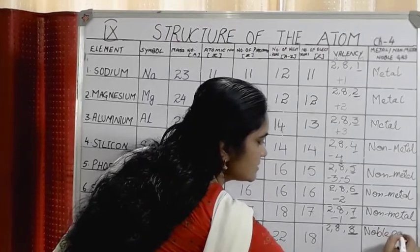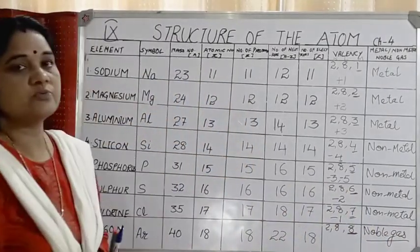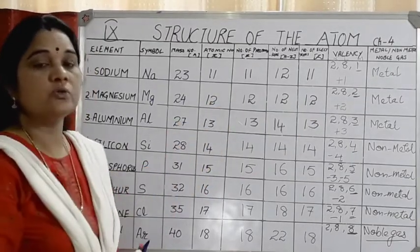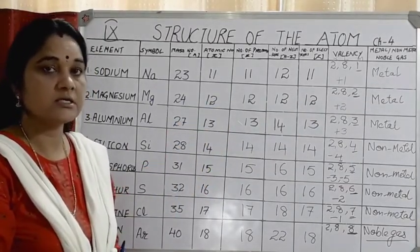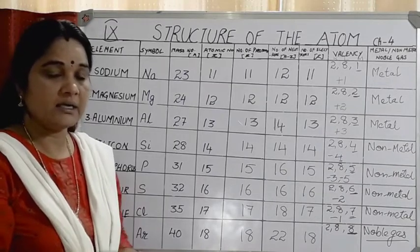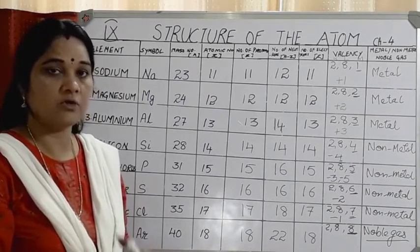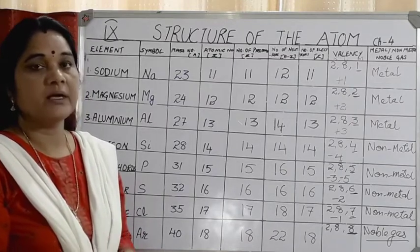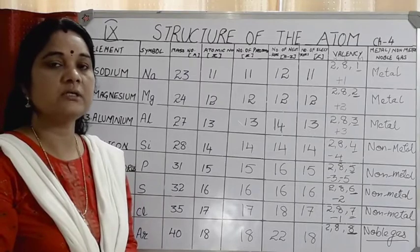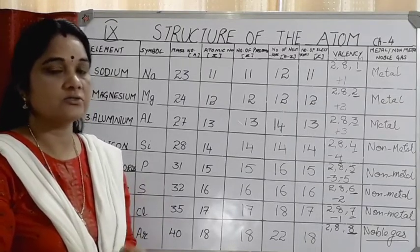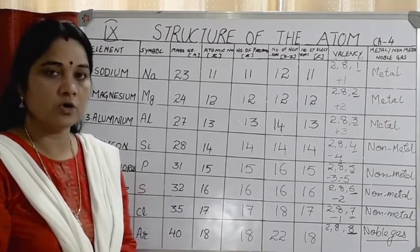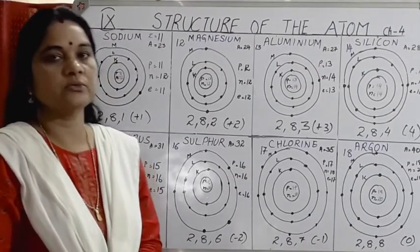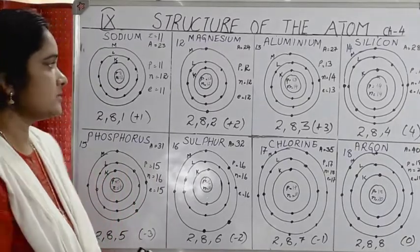Noble gases or inert gases are elements in group 18 (extreme right) of the periodic table. They have stable electronic configurations — either 2 electrons in the outermost shell (duplet) like helium, or 8 electrons (octet) like neon and argon. Having 2 electrons in the outermost shell is called duplet; having 8 is called octet.